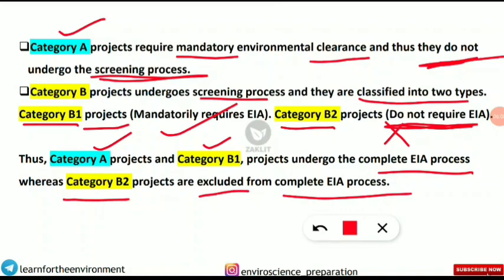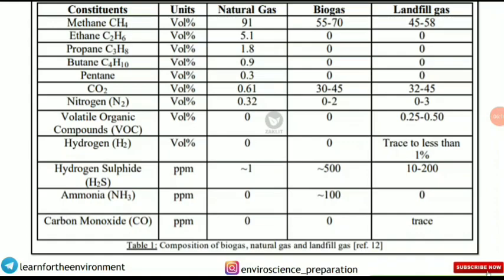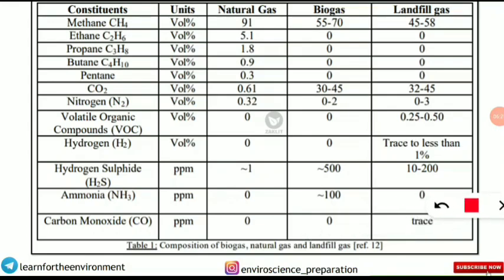The next concept covers the composition of biogas, natural gas, and landfill gases. Questions ask which gas has the maximum constituent in each. In natural gas, methane has the highest concentration at 91% by volume. In biogas, methane is also the maximum constituent. In landfill gas, methane is still the highest at 45 to 58%.